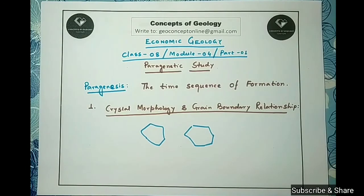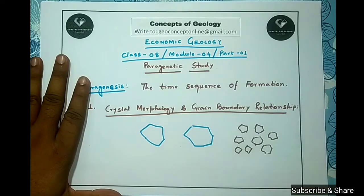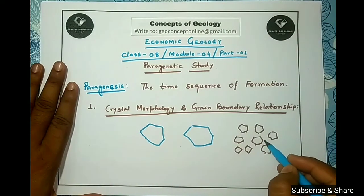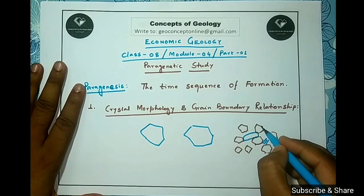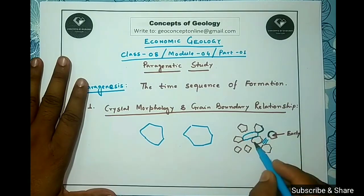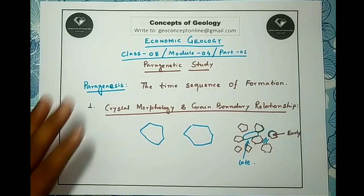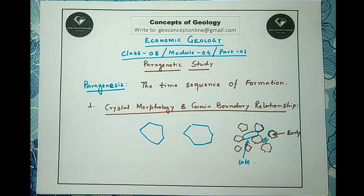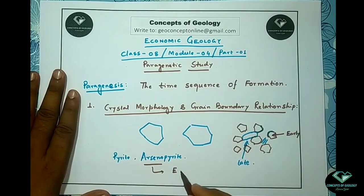Grains with convex boundaries are early-formed, while late-formed grains filling the interstices will have concave boundaries. However, such simplistic interpretations, while mostly correct, must be used with caution. Certain minerals like pyrite and arsenopyrite have a strong force of crystallization and form well-developed crystals regardless of their position in the paragenetic sequence. So pyrite or arsenopyrite form euhedral crystals even when formed late.